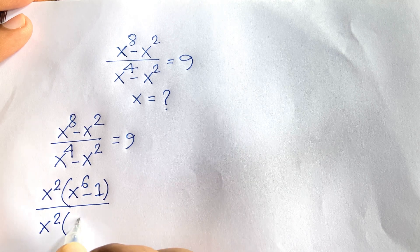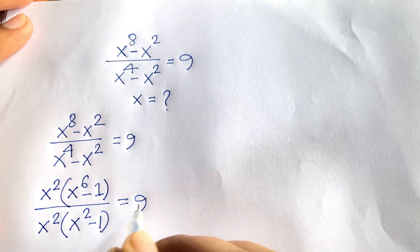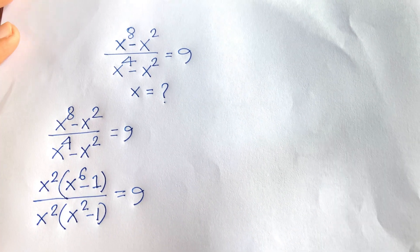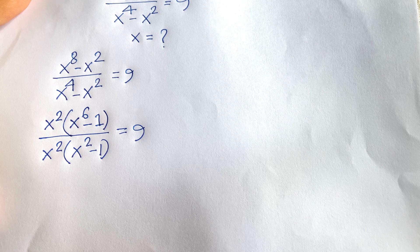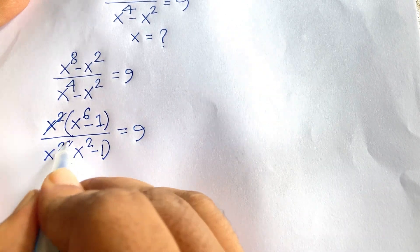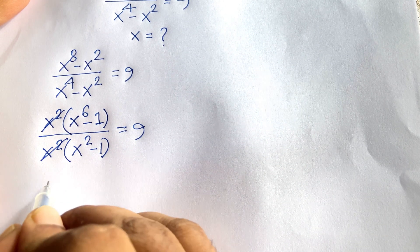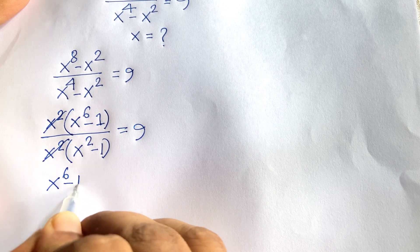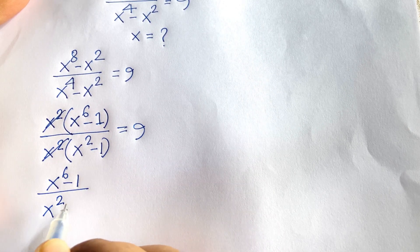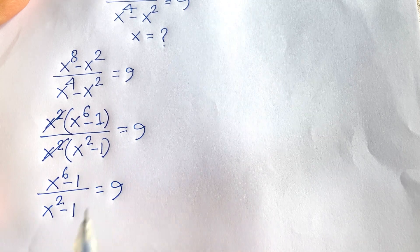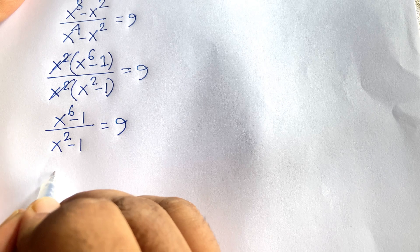After canceling x^2, we get (x^6 - 1) / (x^2 - 1) = 9. Now look — x^2 is the key variable here, and we need to simplify (x^6 - 1) / (x^2 - 1) = 9.